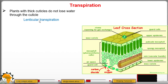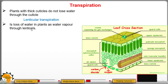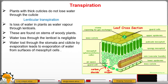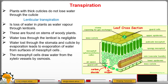The third type is lenticular transpiration — the loss of water vapor through structures called lenticels, found on the stems of woody plants. Water lost through the lenticels is negligible or very small. Water lost through the stomata and cuticle by evaporation leads to evaporation of water from surfaces of the mesophyll layers.